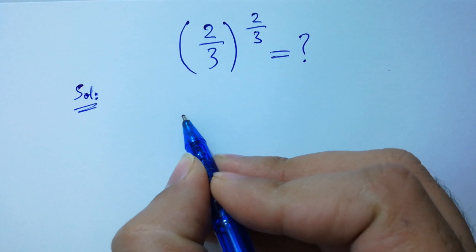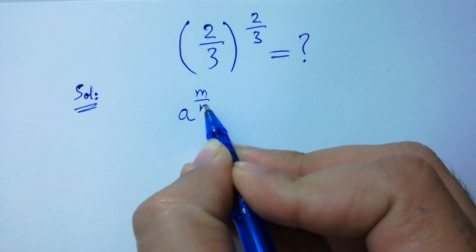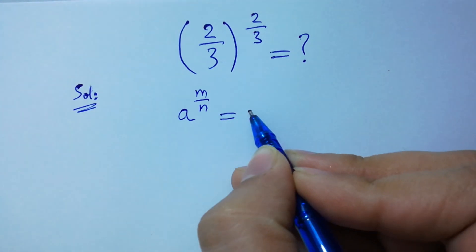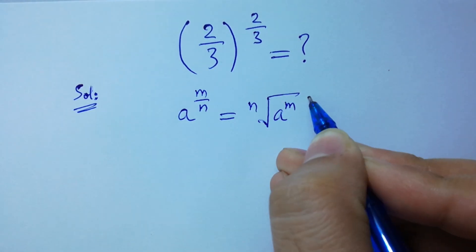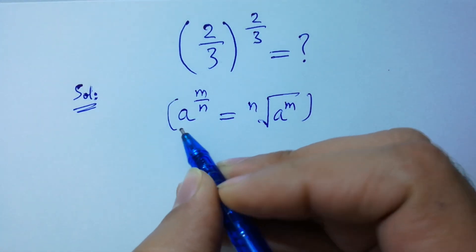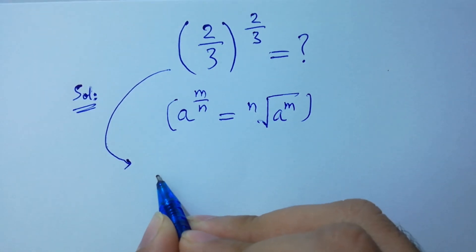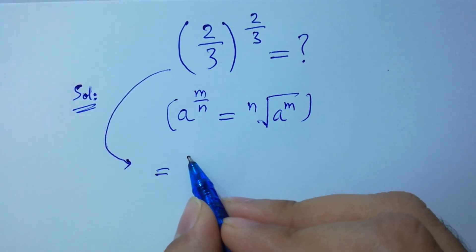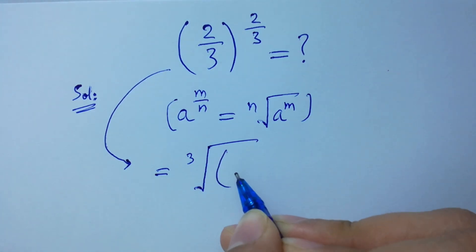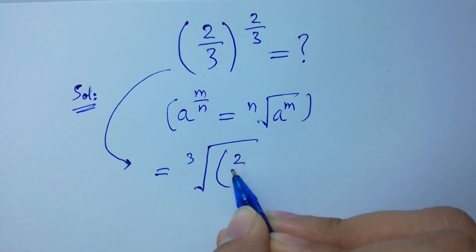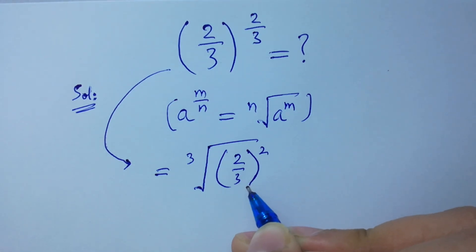Since a to the power m over n is equal to n root a to the power m, this expression is the same as cube root of 2 over 3 to the power 2. I hope you understood.